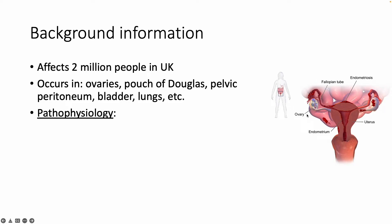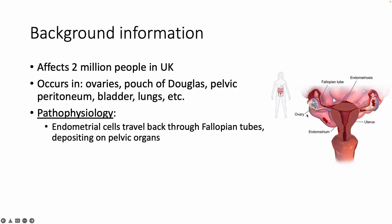In terms of the pathophysiology, it is caused by endometrial cells travelling back through the fallopian tubes and depositing on pelvic organs. As you probably know from your anatomy lessons, the fallopian tubes and the ovaries are not a closed circuit. The fimbria of the fallopian tubes brush over the ovaries, but there is a gap, meaning that those endometrial cells are able to escape through the fallopian tubes and travel within the pelvic cavity and deposit on other pelvic organs.